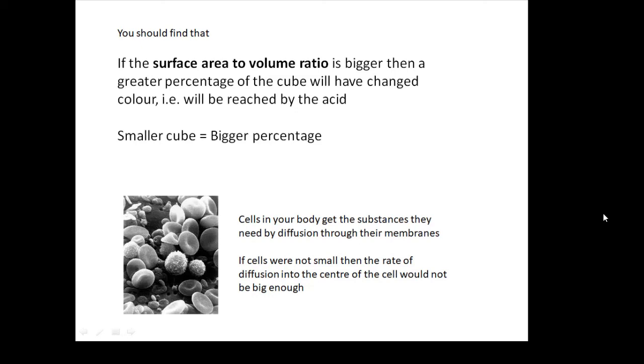So a small cell is like a small cube—oxygen can diffuse into the cell efficiently and reach the center of the cell.